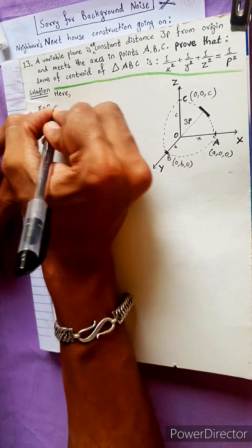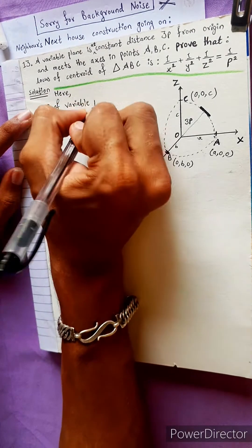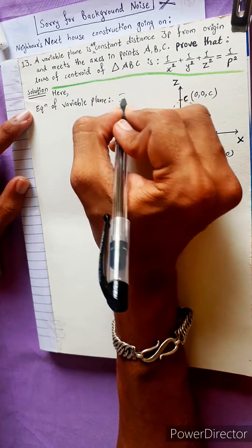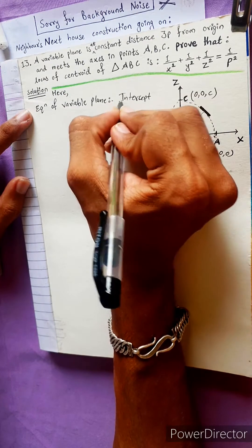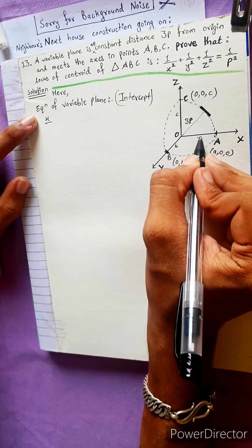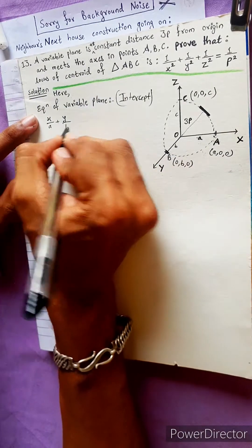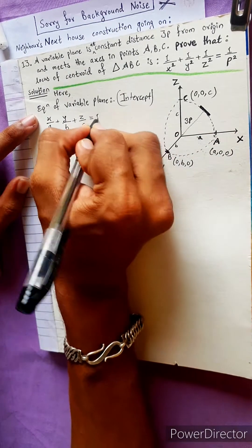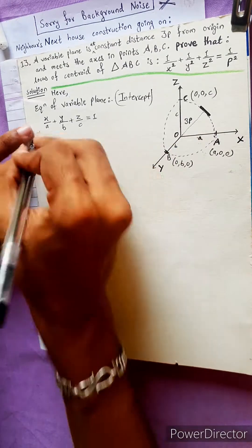Equation of the variable plane: we use the intercept form. The intercept form is x/a + y/b + z/c = 1. This is the equation of the plane.